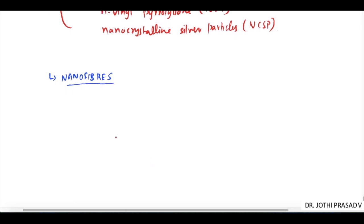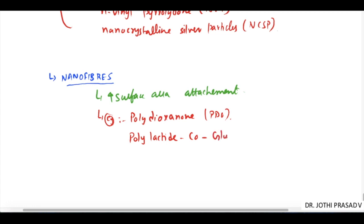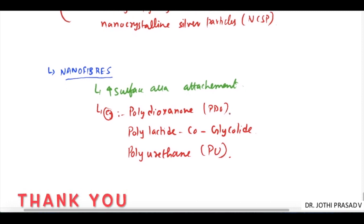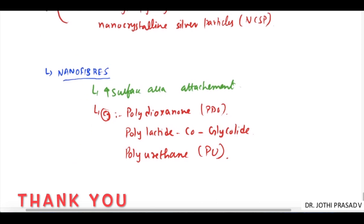Finally, nanofibers have the advantage of high surface area for attachment. Examples are polydioxanone or PDO, polylactide co-glycolide or PLGA, and polyurethane or PU. Thus we have completed the entire mesh and its classification in detail. Thank you.